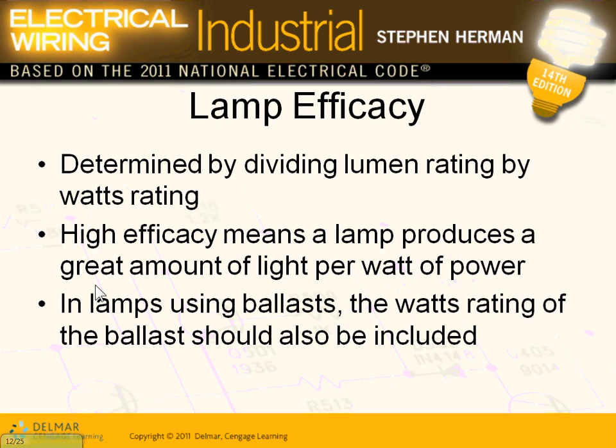Lamp efficacy is a big deal right now because we're becoming environmentally friendly. Efficacy is defined as the lumen per watt — the amount of light per watt. The more lumen per watt I can produce, the better the fixture. It's exactly similar to miles per gallon. The more lumens per watt, the better the fixture I can use.